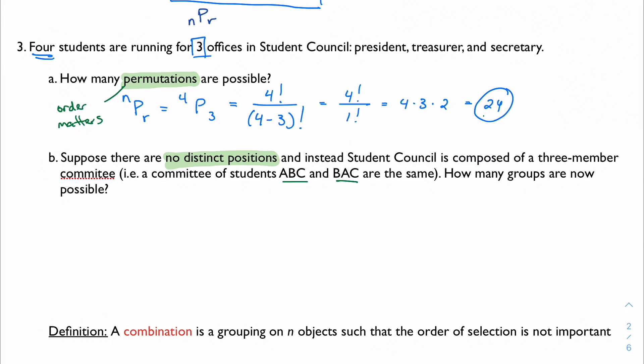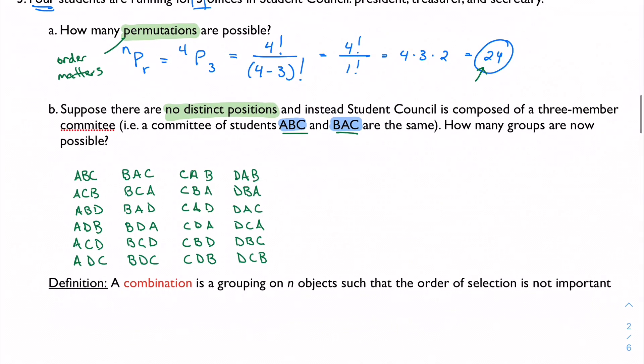We can approach this a couple ways. We can first say, okay, there are 24 possible permutations, but this accounts for a lot of duplicates because now we're saying that these two groups, A, B, C and B, A, C are identical. One way we can start to do this is here are all of the permutations of student council members, and let's just mark off the non-duplicates.